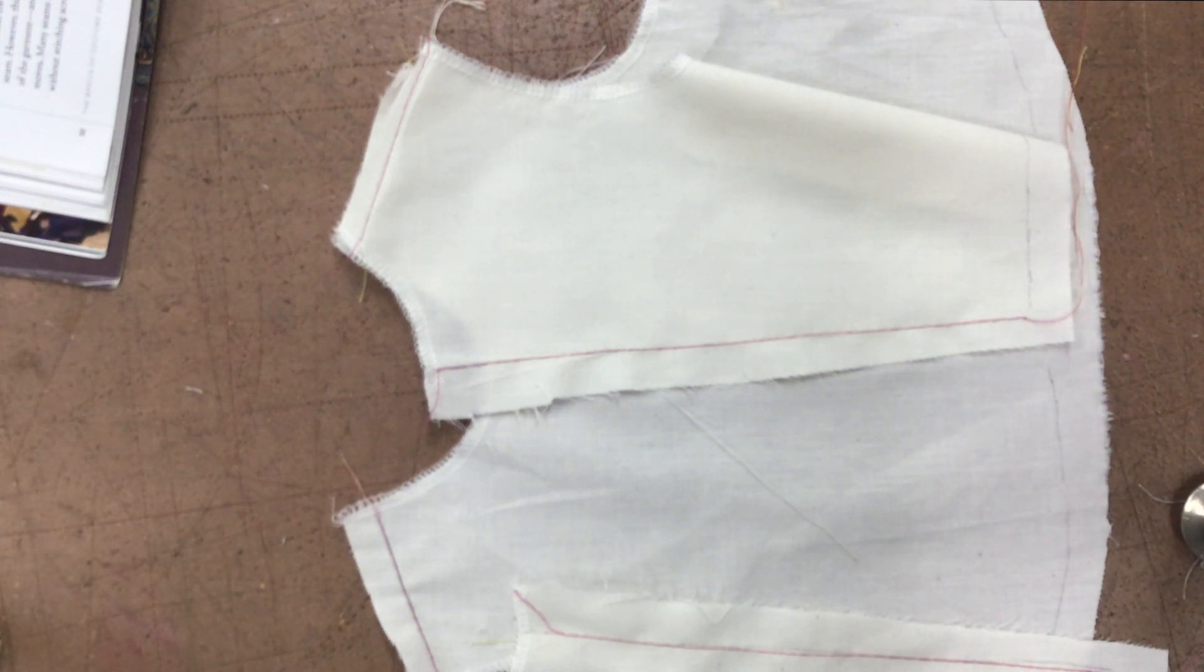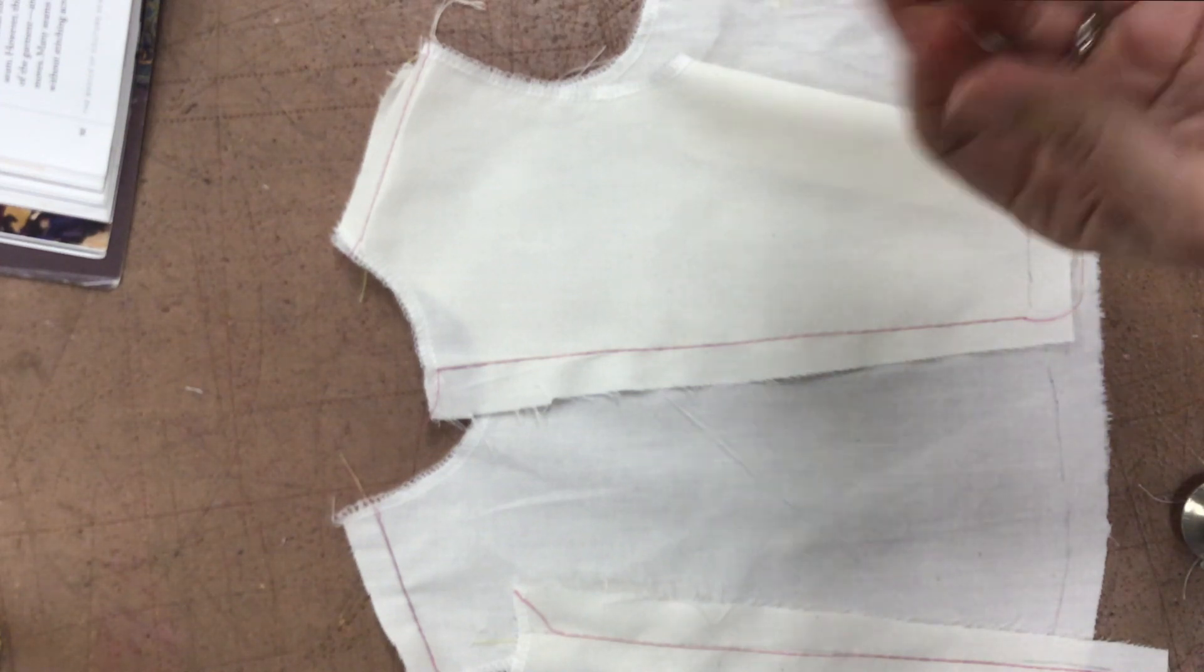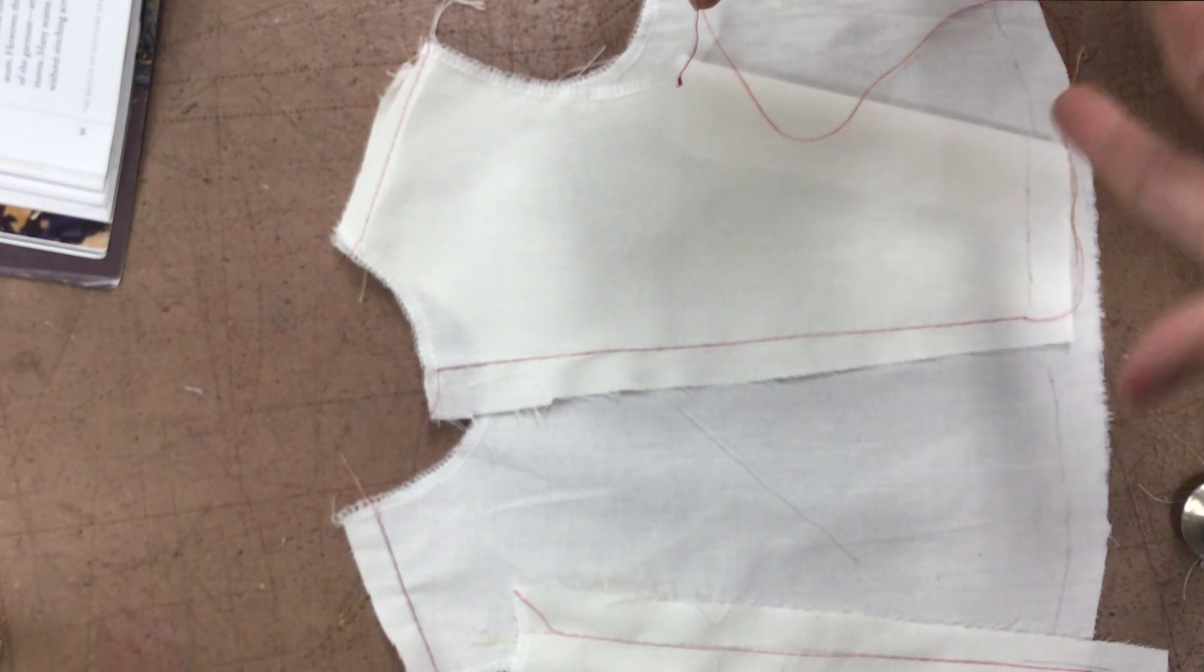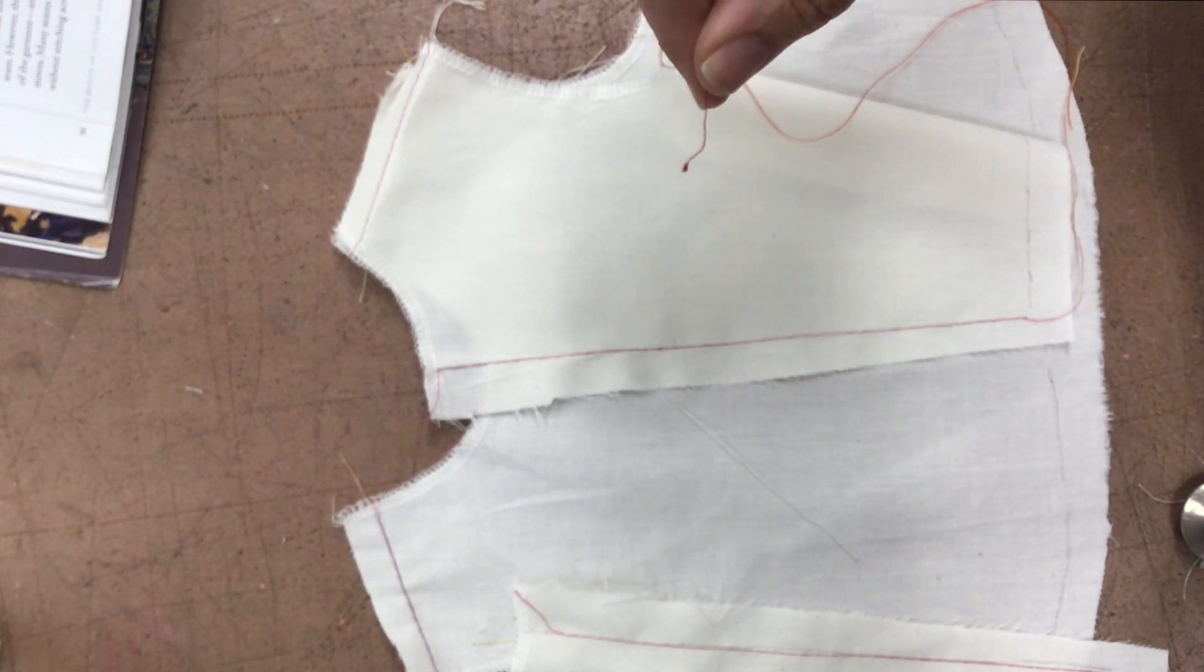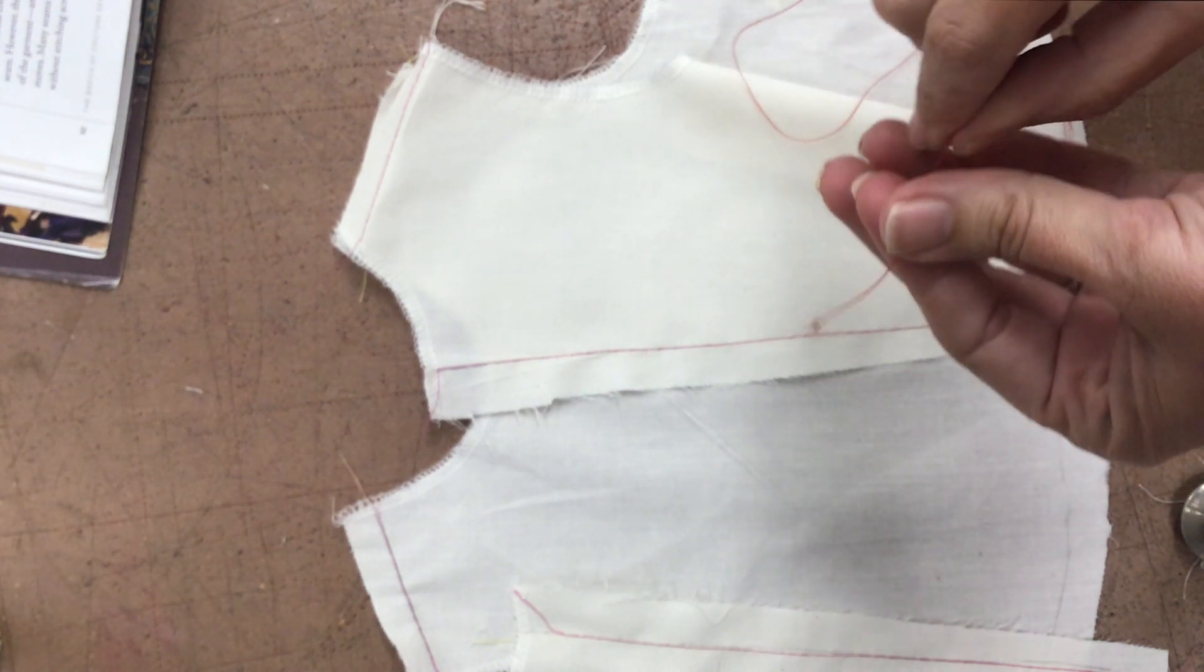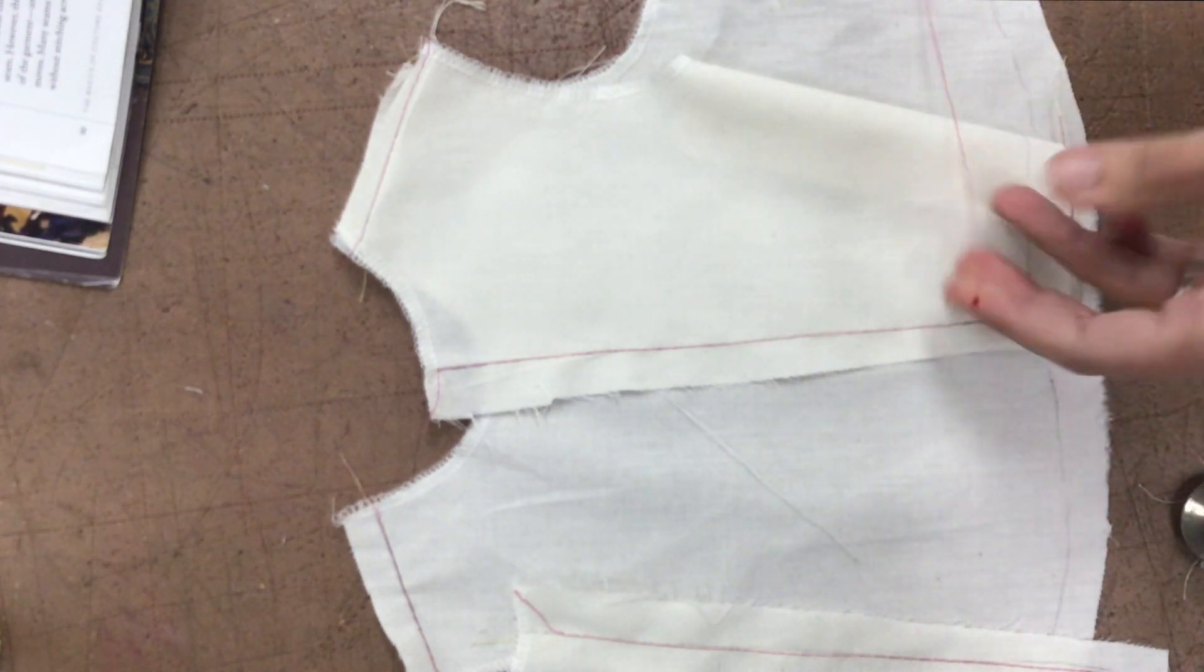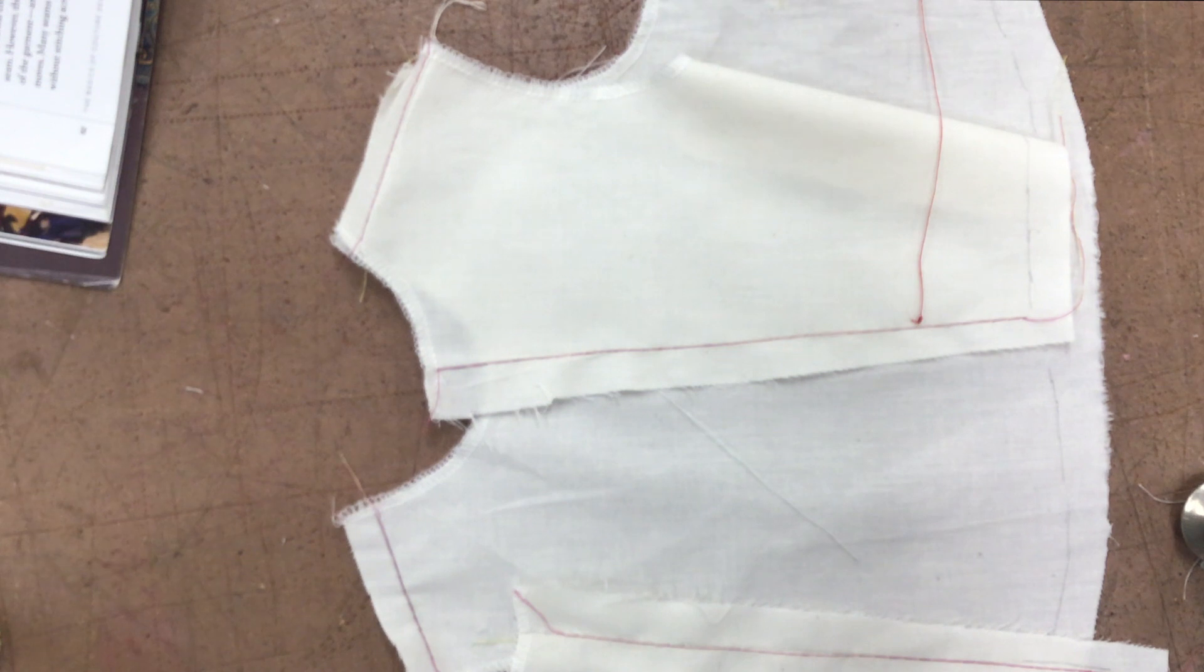Step one, wrong side up, begin with a simple knot and stitch a row of short even basting stitches on the seam line with approximately 20 stitches to the inch, leaving the thread slack with a long tail. So they're definitely going to be short if we're going to do 20 in one inch. I'll try it.